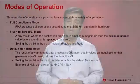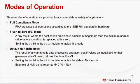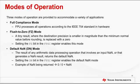The floating-point unit can be operated in three modes: full-compliance mode, flush-to-zero mode, and default NAN mode. In full-compliance mode, the floating-point unit processes all operations according to the IEEE 754 standard. In flush-to-zero mode, the FPU replaces a tiny result—where the destination precision is smaller in magnitude than the minimum normal value before rounding—with a zero. This mode is enabled by setting the FZ bit in the floating-point status control register. In default NAN mode, the FPU returns a default NAN when the result of any arithmetic data processing operation involves an input NAN or generates a NAN result. This mode is enabled by setting the DN bit in the floating-point status control register.